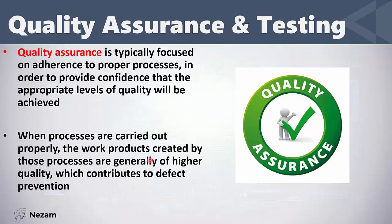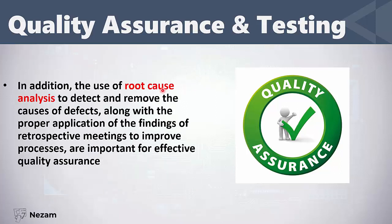Quality assurance focuses on the process. If the process is done correctly, the work product created by this process will have a higher quality, which means we will prevent defects. In quality assurance, we also use root cause analysis — identifying why defects happened — and we focus on solving the root cause so that those defects don't happen in the future.